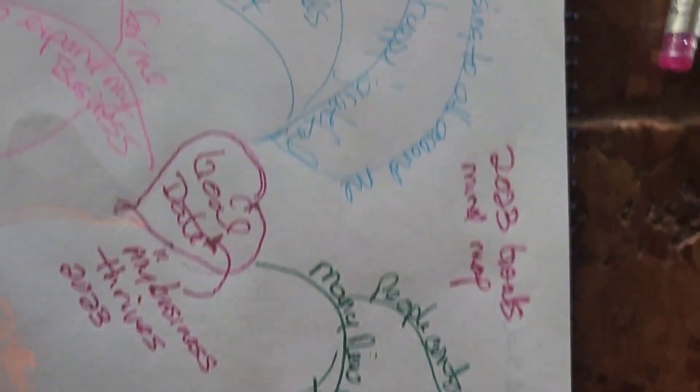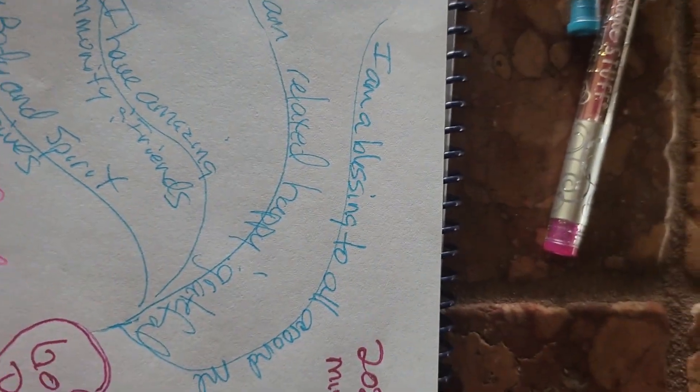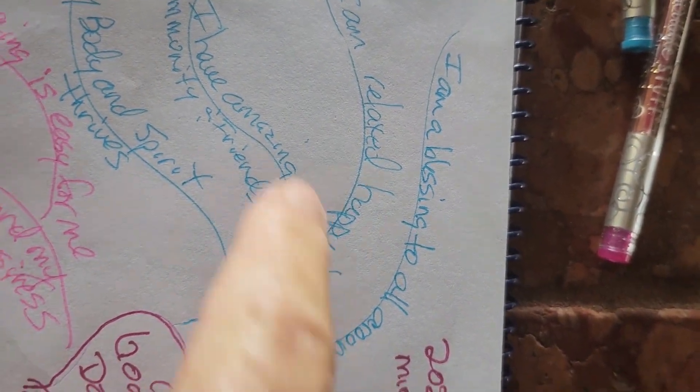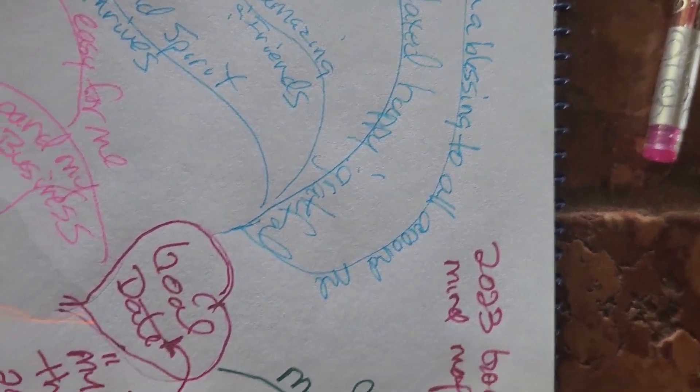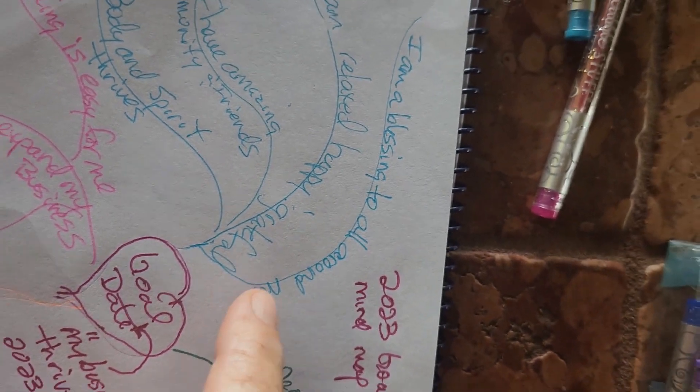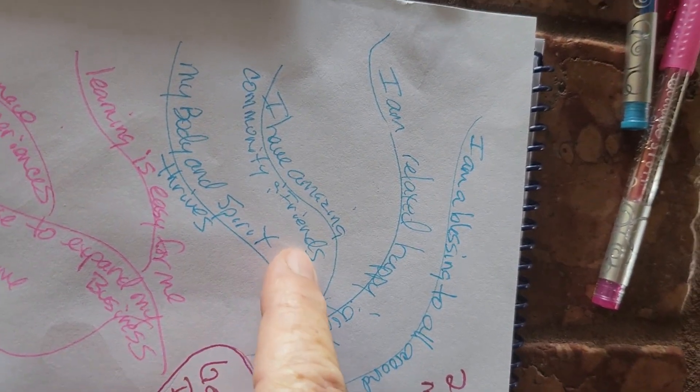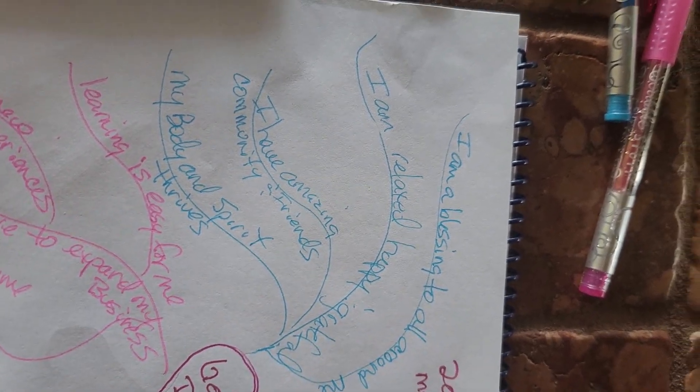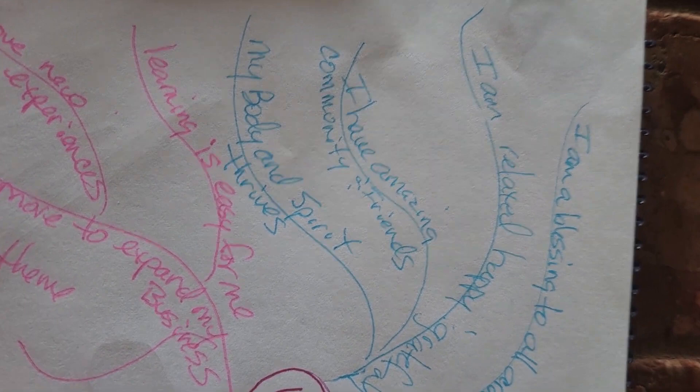So over here on the light blue line, I am relaxed, happy, and grateful. If all of this happens, this is a line of how I'm going to feel in my body when this has happened. I am a blessing to all around me. Because I'm already happy and grateful. I have amazing community and friends because I'm already happy and grateful. My body and spirit thrives.